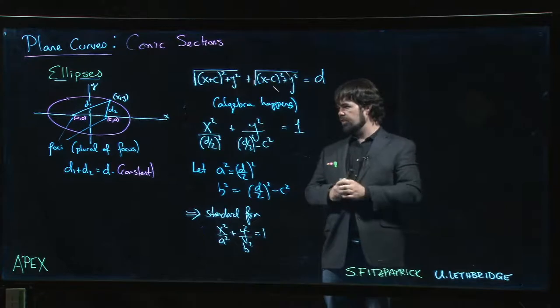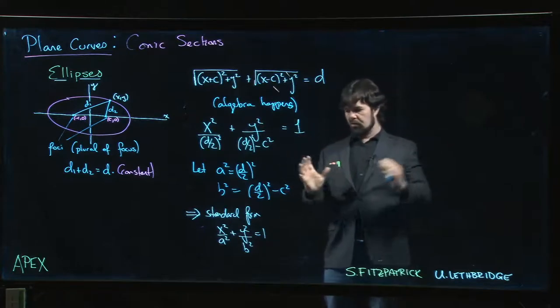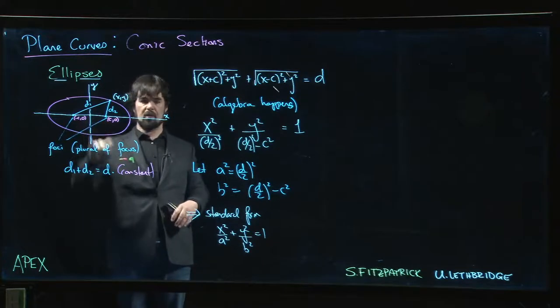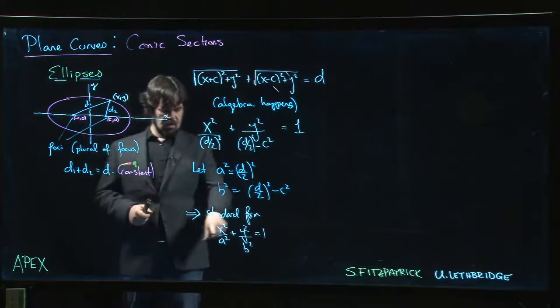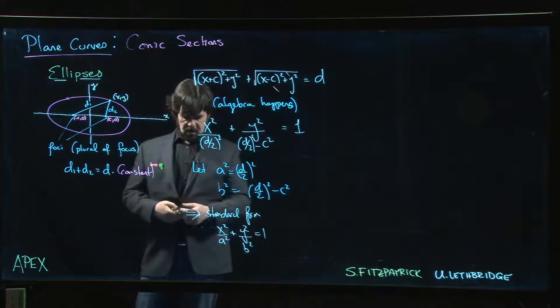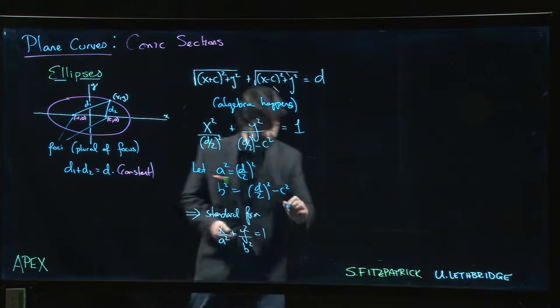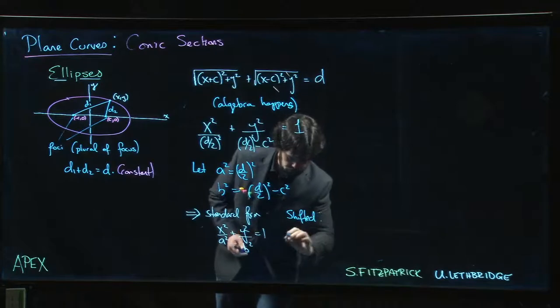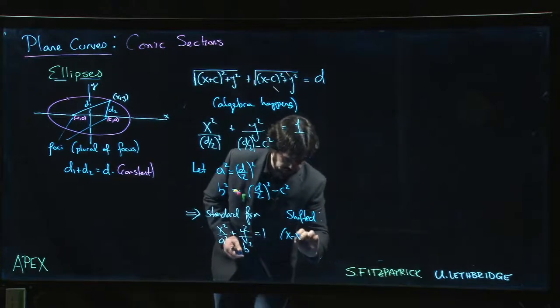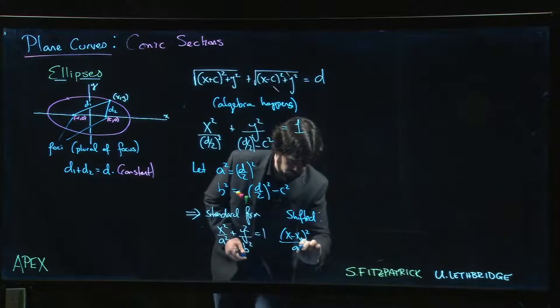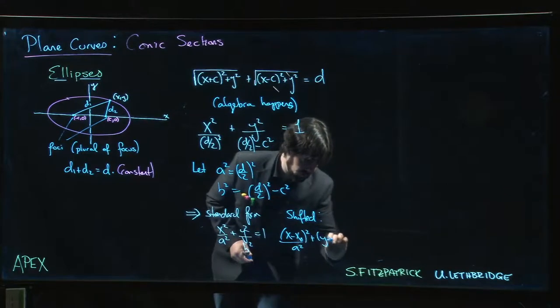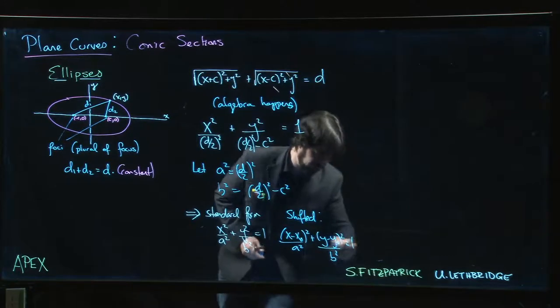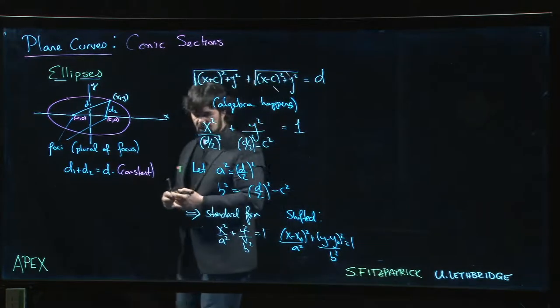Of course, if you want to shift the origin—if you want to have an ellipse centered somewhere else, so the foci aren't kind of centered with respect to the coordinate system like this—you can do the usual thing. If we want to shift it, then we'll have something that looks like (x - x₀)²/a² + (y - y₀)²/b² = 1. That's what the shifted version is going to look like.